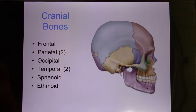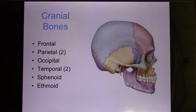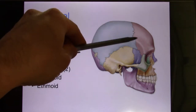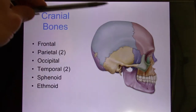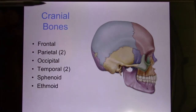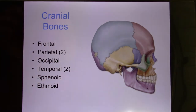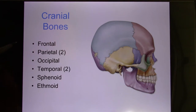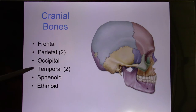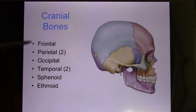The cranial bones are mostly flat bones, except the last two which are irregular. You have the frontal bone, two parietal bones, one occipital, and two temporal bones. When we talk about the brain lobes, they use the same names — frontal lobe, parietal lobe, occipital lobe, and temporal lobe. So these four are easy to identify.